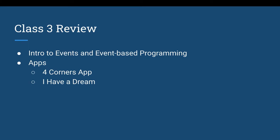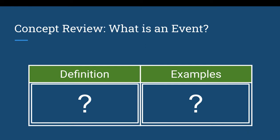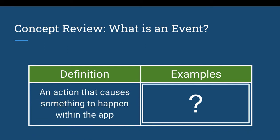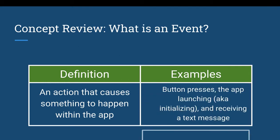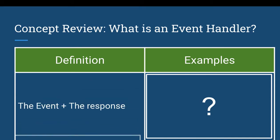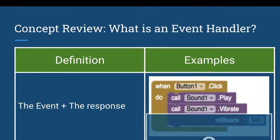We built two apps: the Four Corners app and I Have a Dream. To review: an event is an action that causes something to happen in an app — a user-generated action. That would be clicking a button, scrolling, shaking the screen, getting a text message, and such things. A related idea is the event handler, which is simply the event plus the response — whatever the user does to trigger a response.